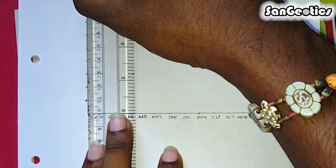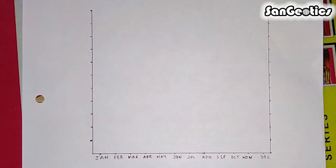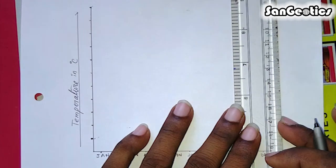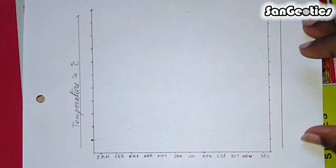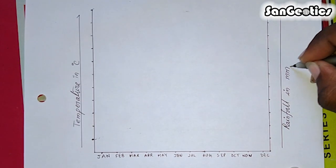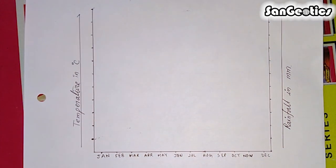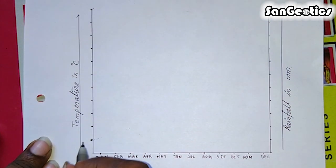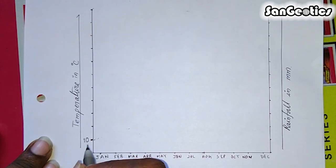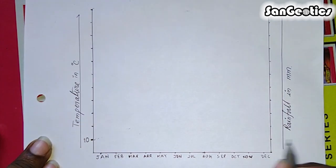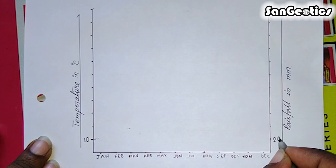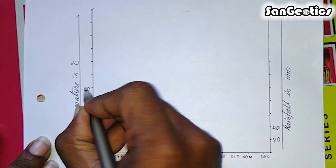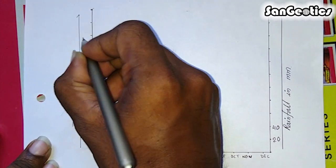After that, draw two y-axes: one for temperature in degree Celsius and another for rainfall in millimeters. The scale must be chosen such that the line marking 10 degrees Celsius should be equal to 20 millimeters of rainfall in the other axis. Rainfall scale should be twice the value of temperature scale selected.